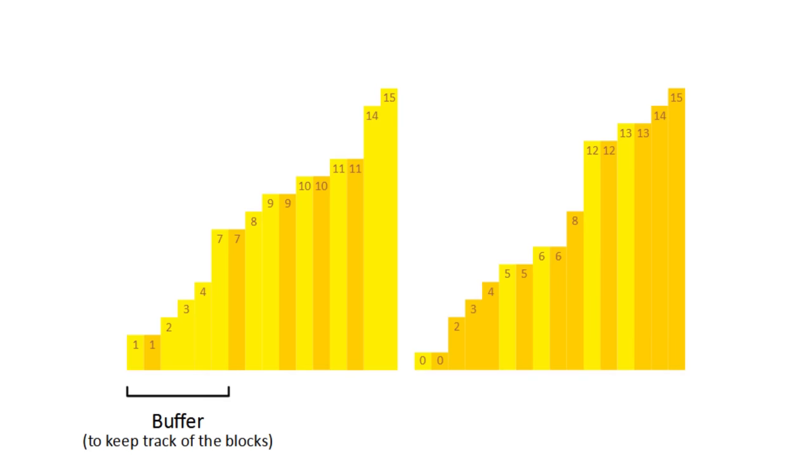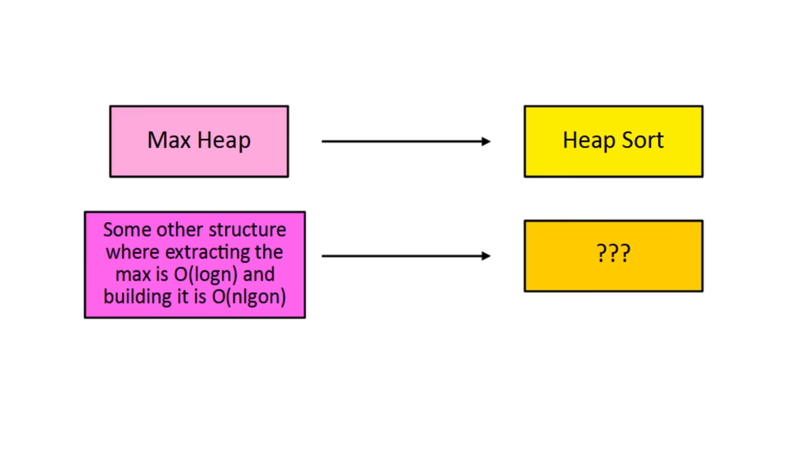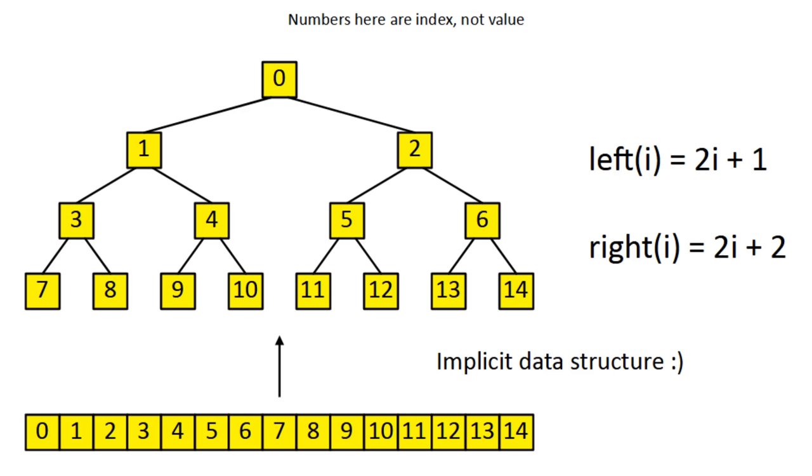Now let's look at a few variations on heap sort. All you have to do is replace the max heap with another type of structure where extracting the max is O of log n and building it is O of n. Ideally, you want it to be implicit, which means you can use the original list to store this structure.